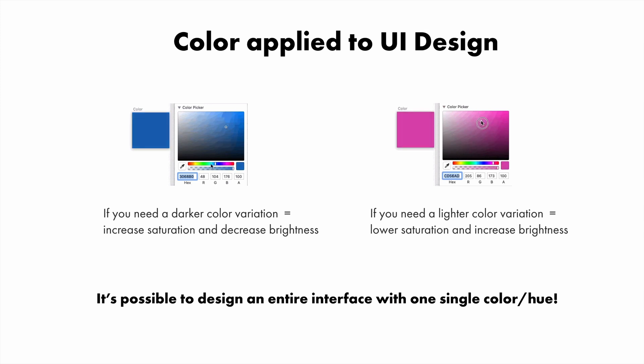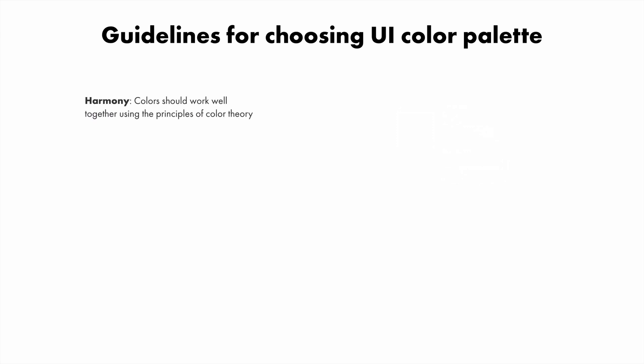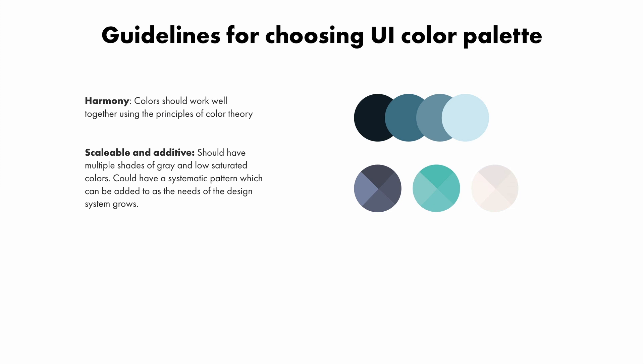Let's talk about how we can do that. Guidelines for choosing color palettes for your user interface: colors should follow proper color harmony using color theory formulas. I recommend colors.co for help with generating color palettes if you need it. They should be scalable and additive within the larger scope of your interface and design system.